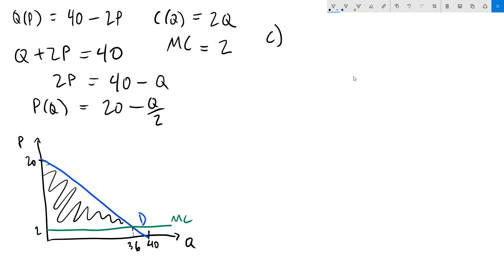For C, we're going to do block pricing. We know that in block pricing the exact same number of units will be sold as in two-part pricing. So we already know that the quantity is going to be 36, the socially efficient quantity.